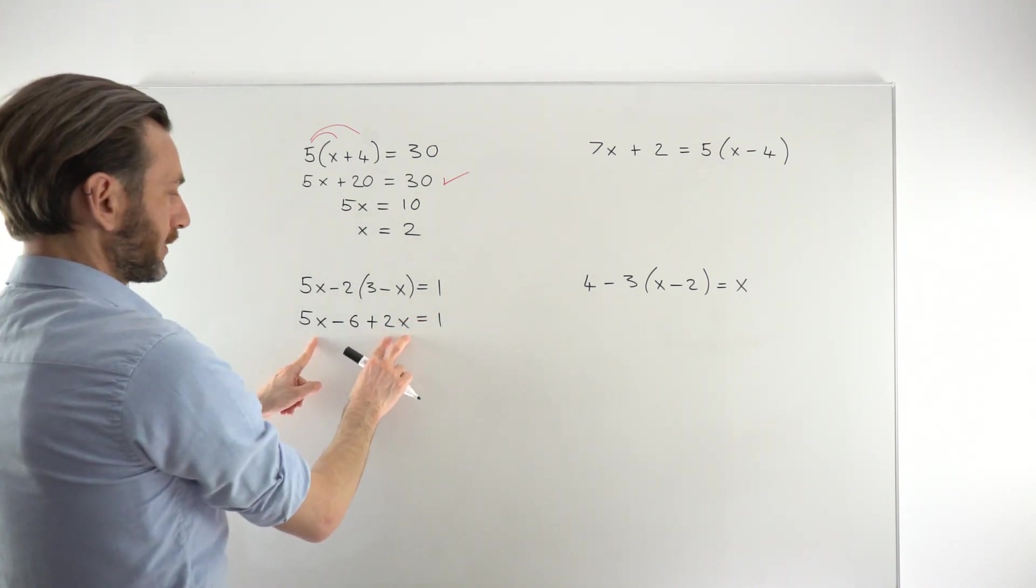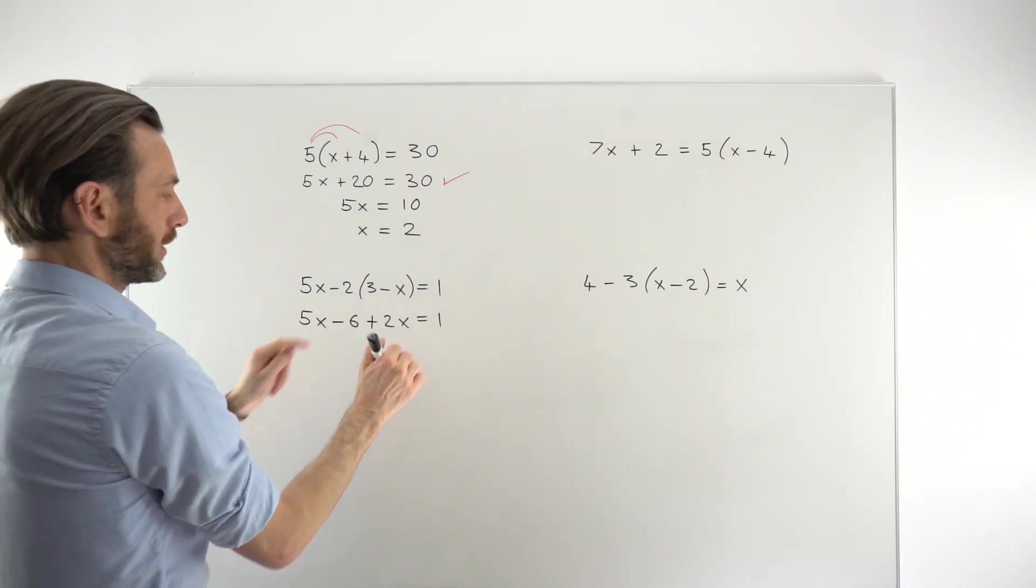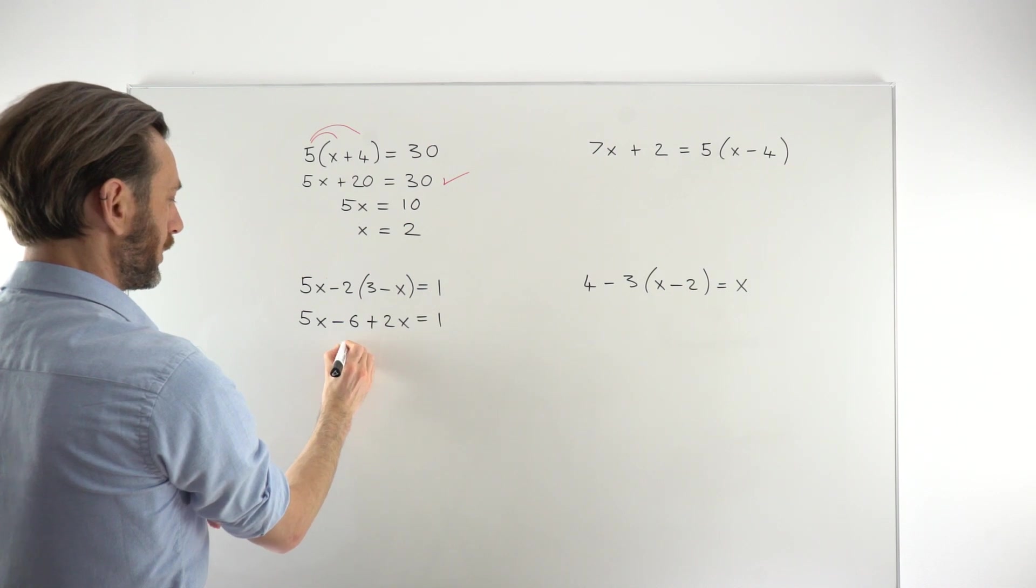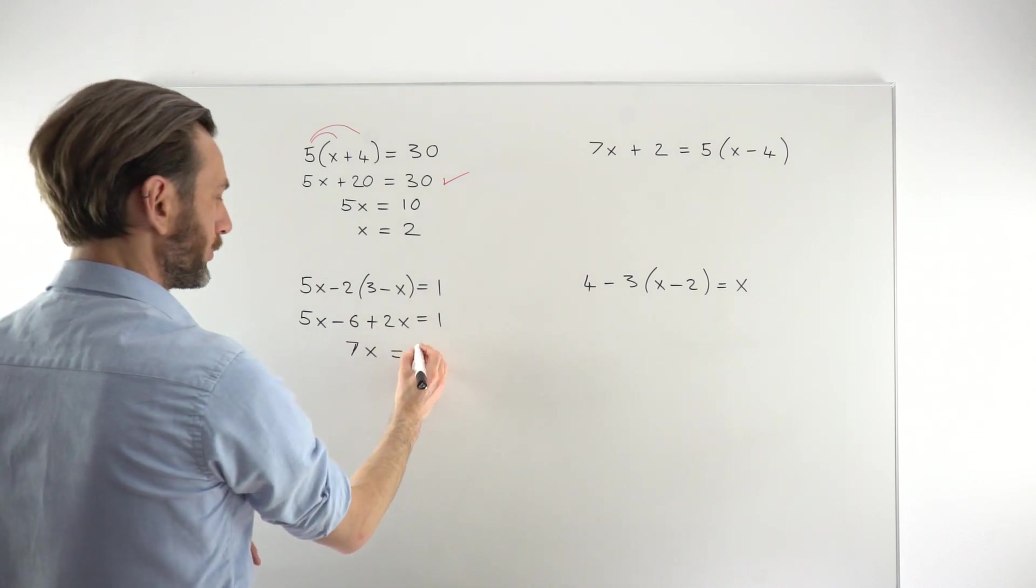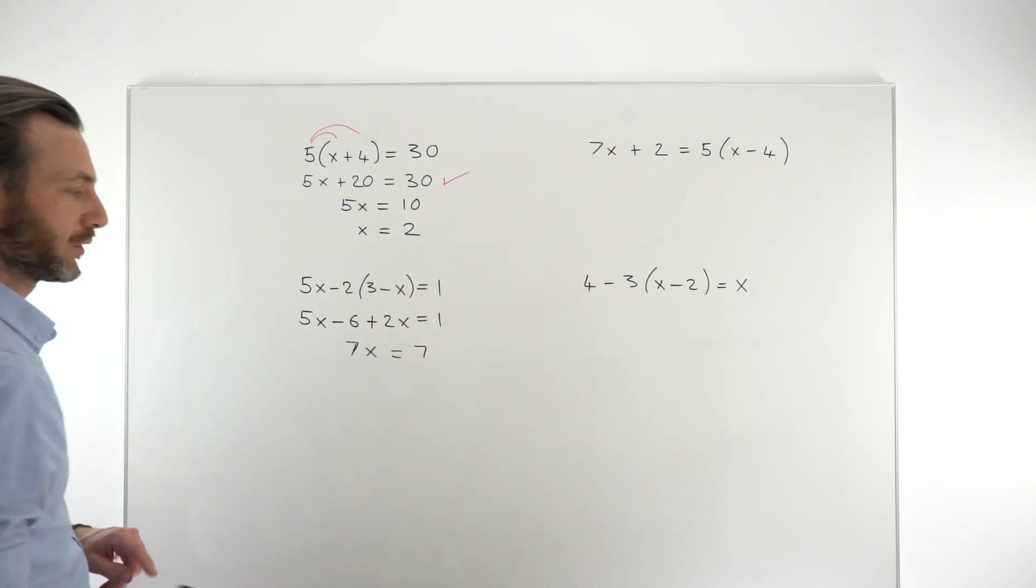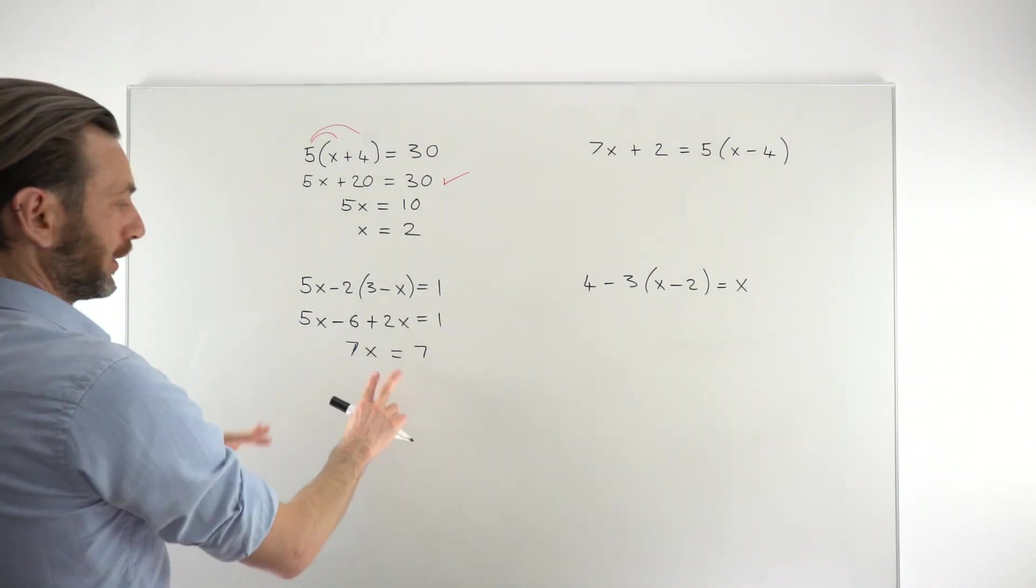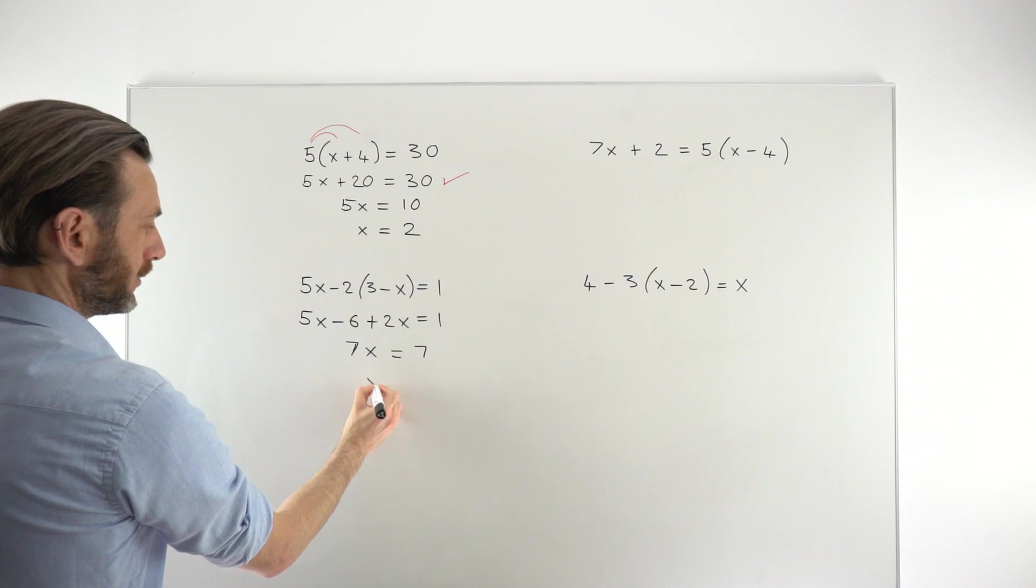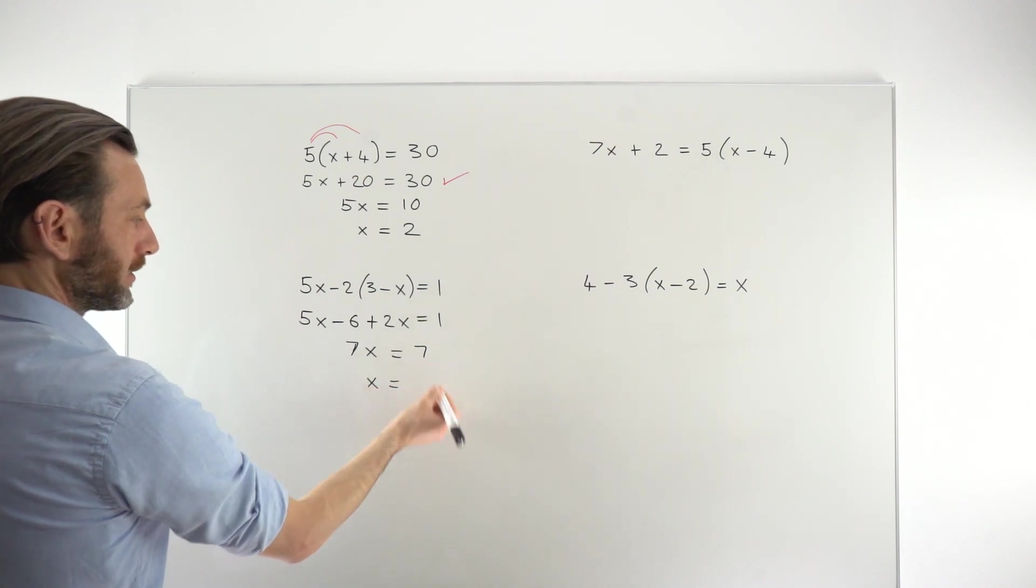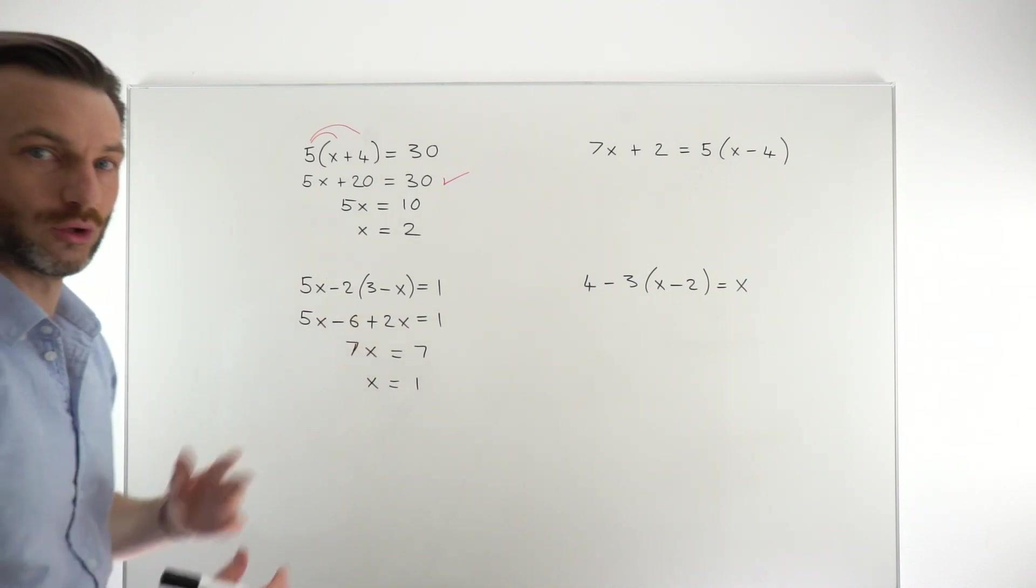We're going to keep these x's on this side of the equation. We can gather them together now. We've got 5x plus 2x to give us 7x. We're going to move the minus 6 to the other side. It will become a positive to give us 1 plus 6, which is positive 7. And then finally, like all linear equations, dividing both sides by the coefficient of the x to get x equals 7 divided by 7 is 1. So 1 is the solution to that equation.